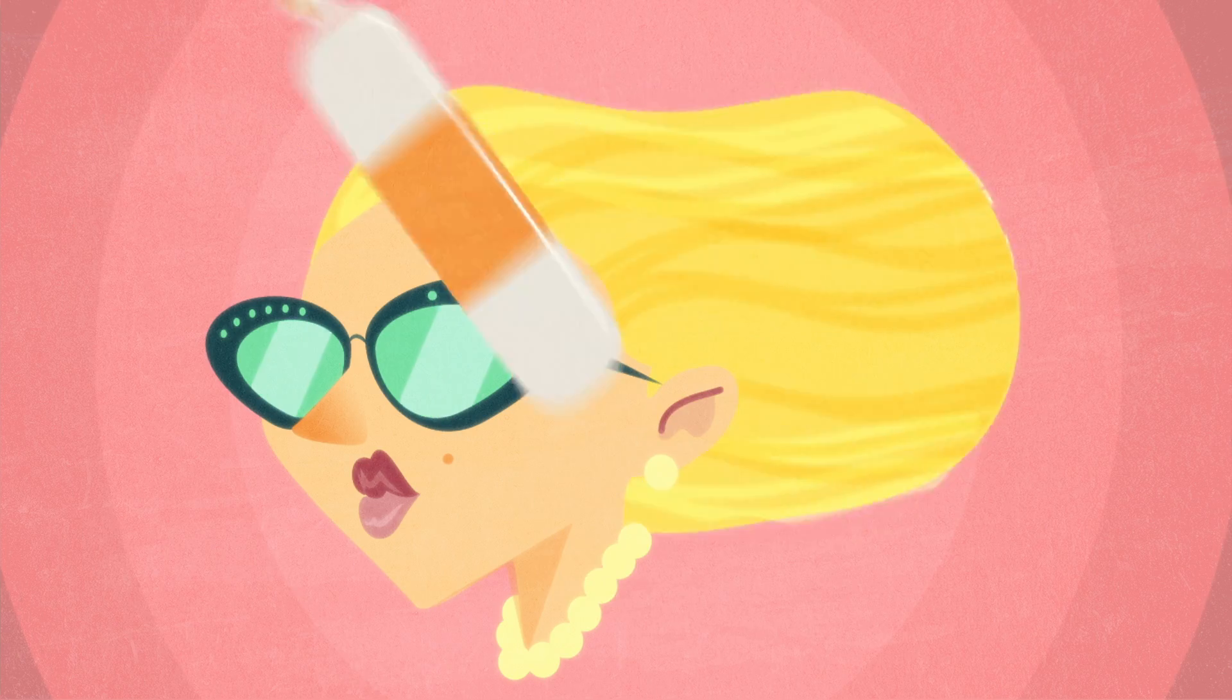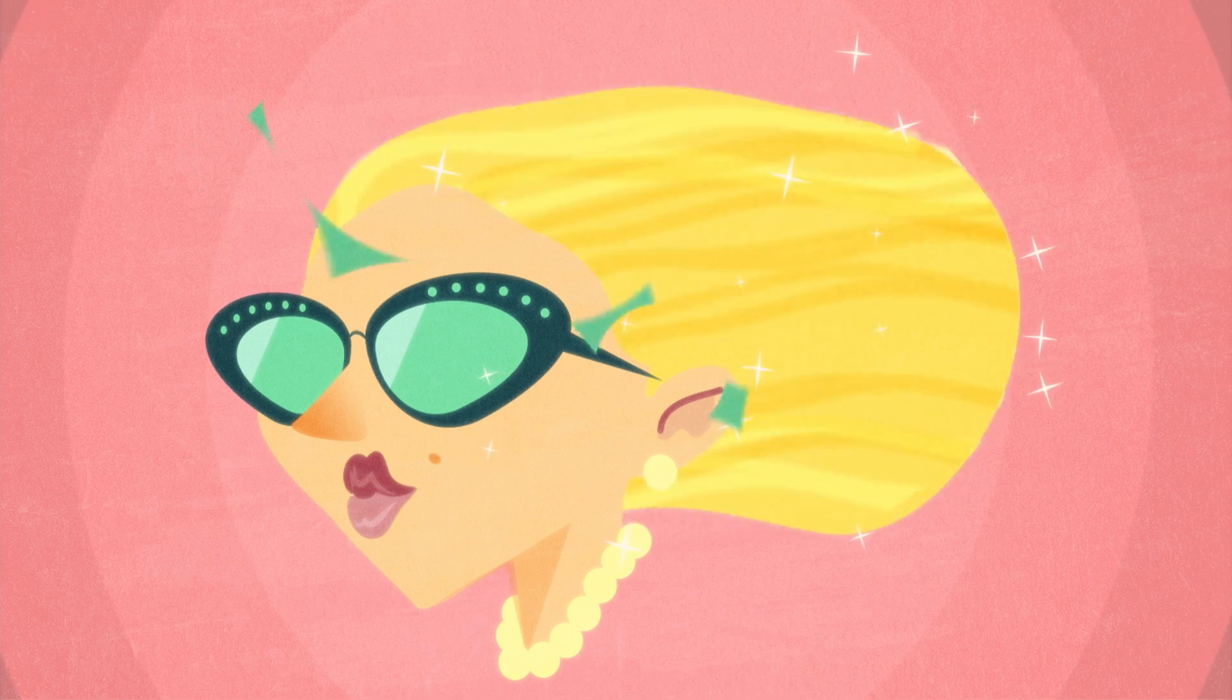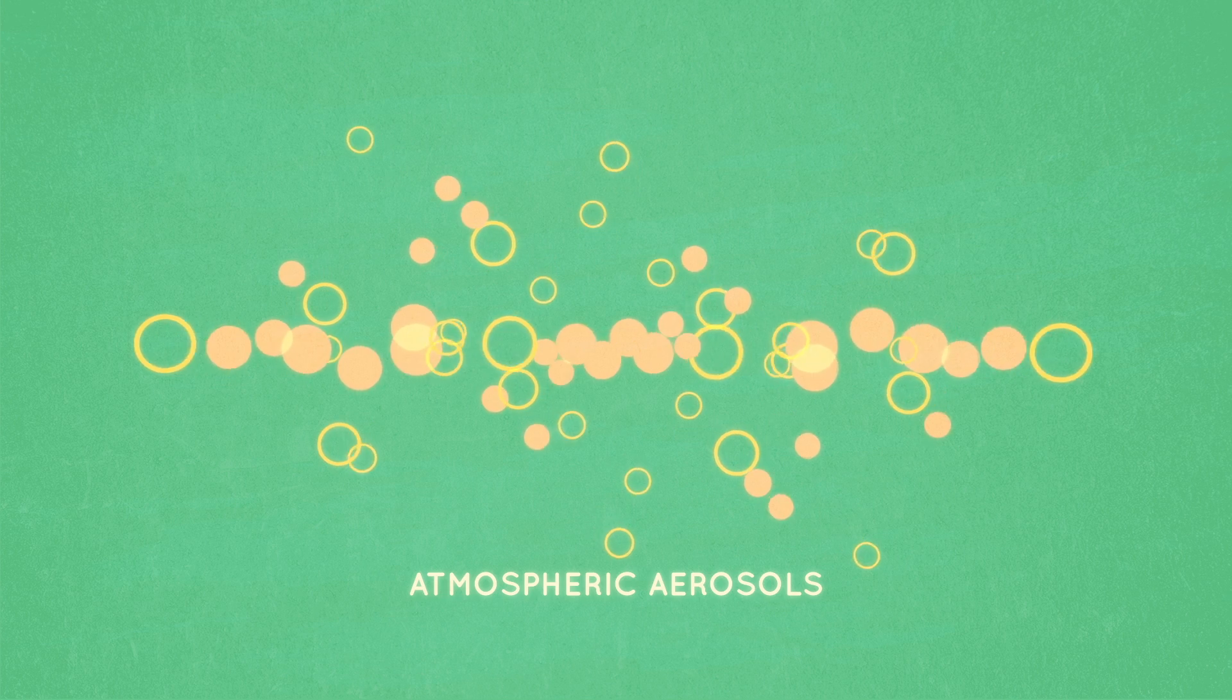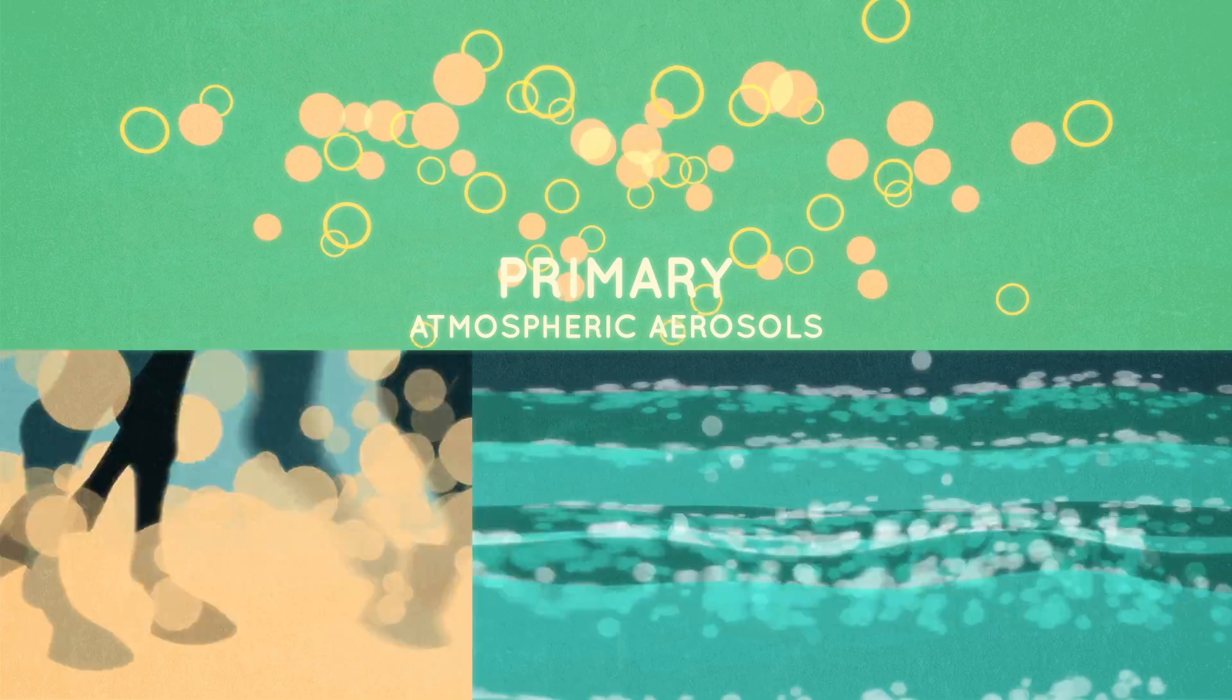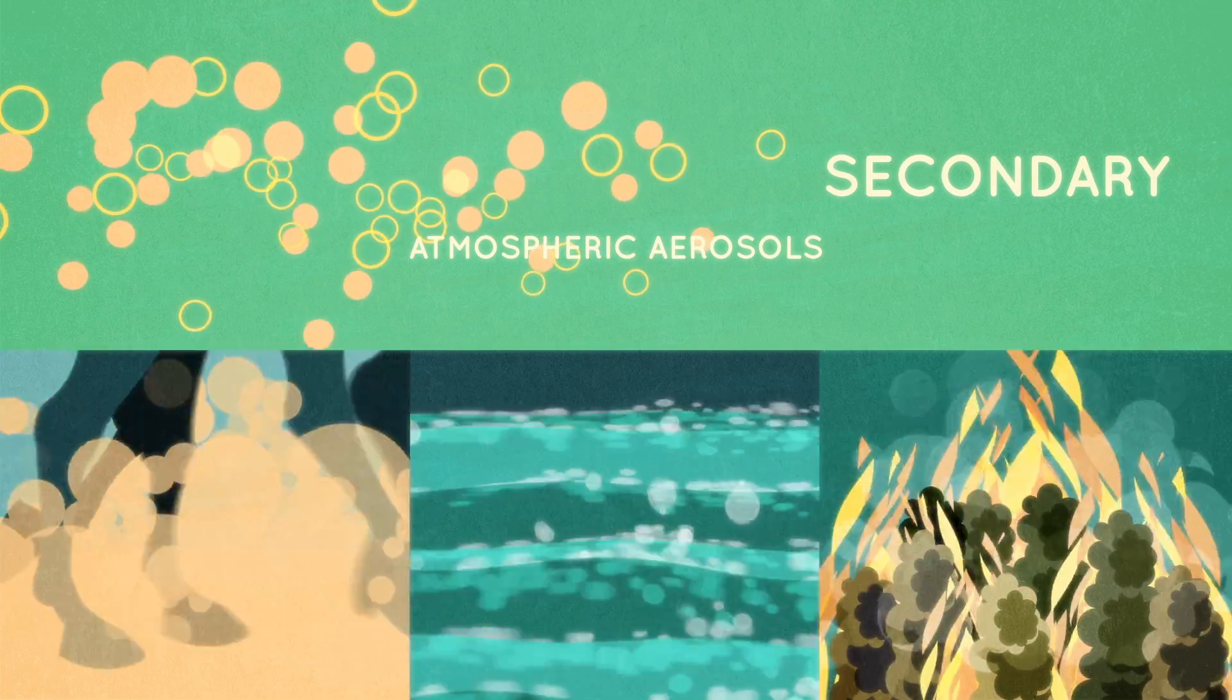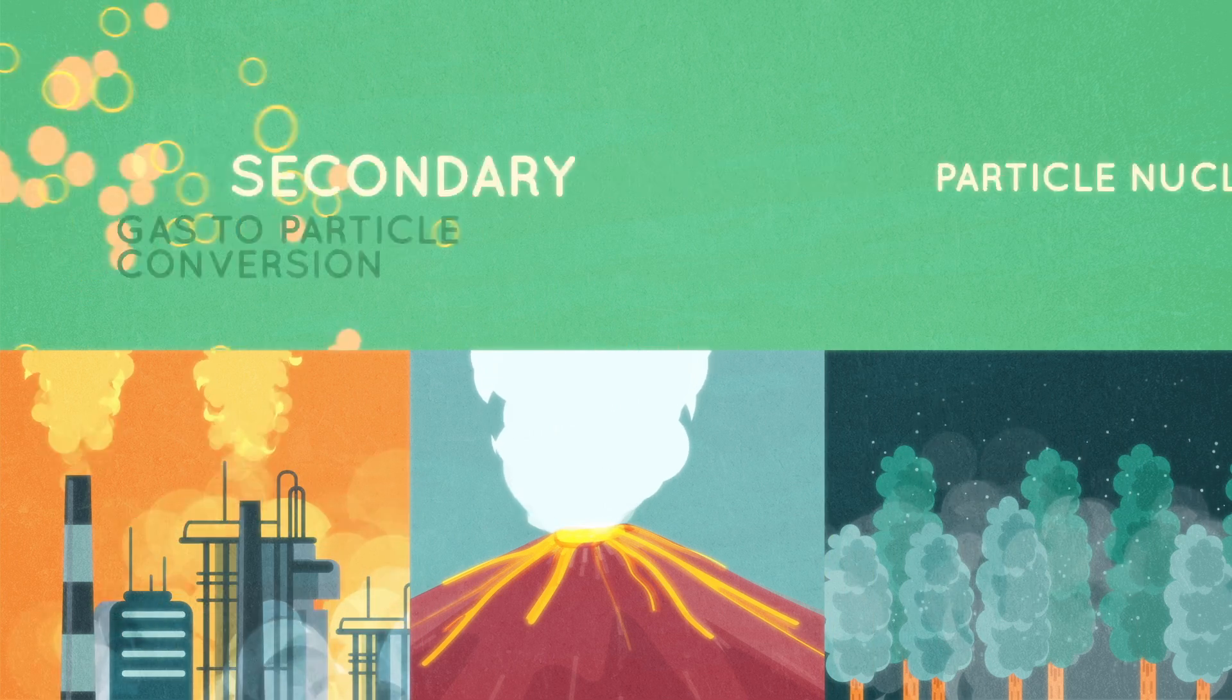Now, to most people, aerosols are the thing that make your hair stick. But that's only one type of aerosol. Atmospheric aerosols are tiny liquid or solid particles suspended in the air. They are either primary, from dust, sea spray salt, or burning biomass, or secondary, formed by gas to particle conversion in the atmosphere, also known as particle nucleation.